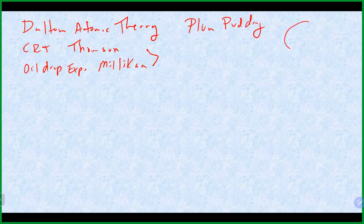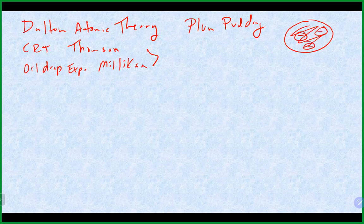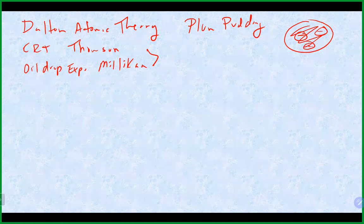The plum pudding model was a spherical model where the positive charges were spread out and the electrons were embedded inside. This was the accepted model of the atom until the next really major experiment, which was the gold foil experiment, done by Rutherford.